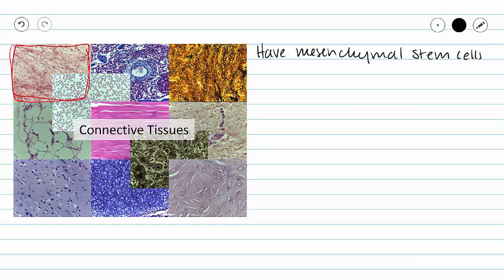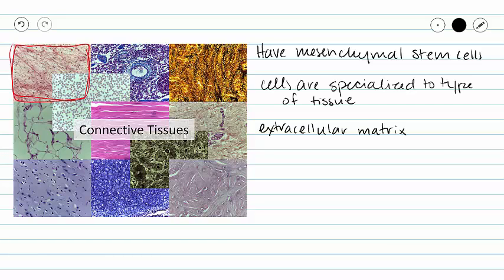Connective tissues are made out of two different parts: cells and extracellular matrix. Our cells are going to be specialized to the type of tissue we are looking at. Our extracellular matrix is also going to be made out of two different components. We have extracellular fibers and ground substance. Extracellular fibers are specialized fiber types that are made by our cells and then secreted into the matrix for a specific function.